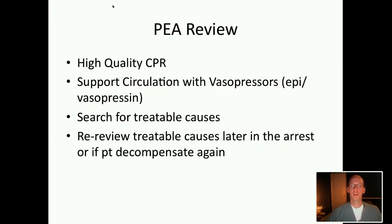To review PEA and asystole — the treatments are the same: high-quality CPR, support circulation with vasopressors — epinephrine and a single dose of vasopressin. Search for treatable causes, run the list, then re-run it looking for causes that develop as the arrest progresses. If the patient comes back and re-codes, re-run the list again — a new finding may have resulted from the original arrest therapy, for example a pneumothorax from chest compressions. Constantly reassess and re-review.